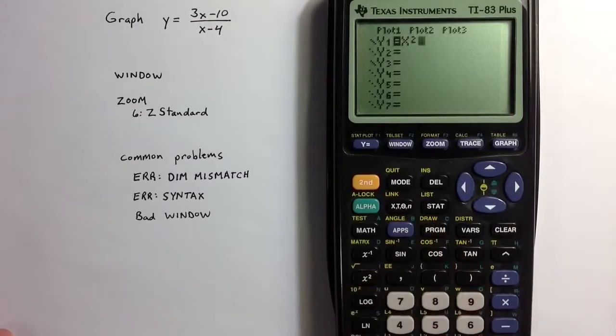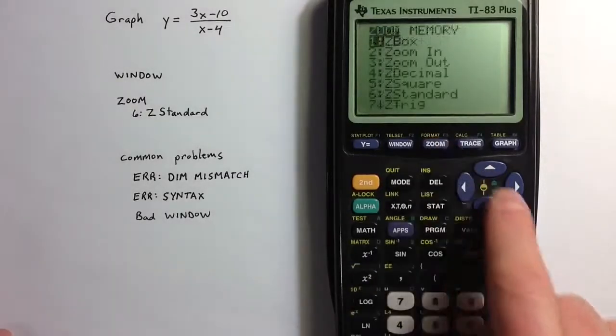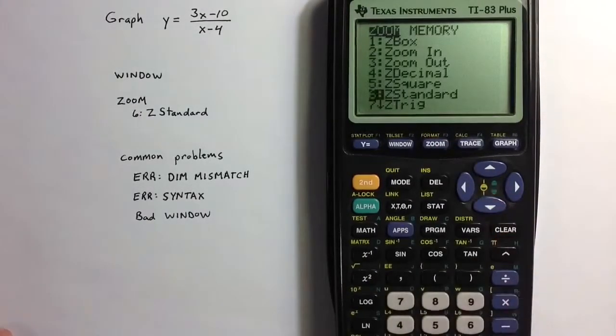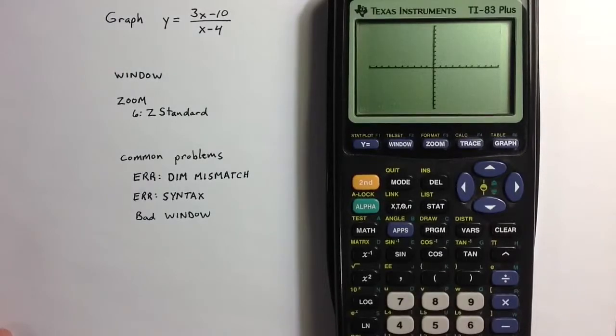If I take x squared plus 15 and try to graph that in a standard window, the negative 10 to 10 sort of standard window...